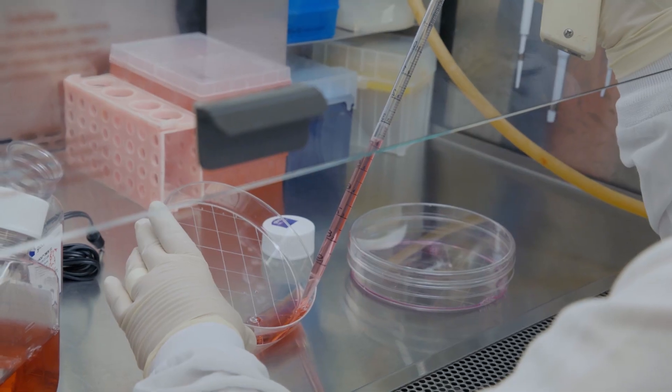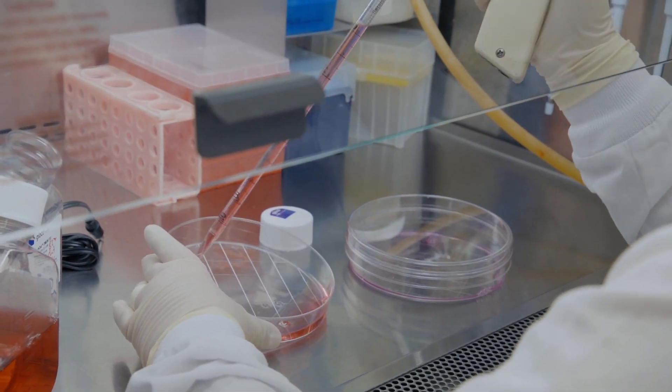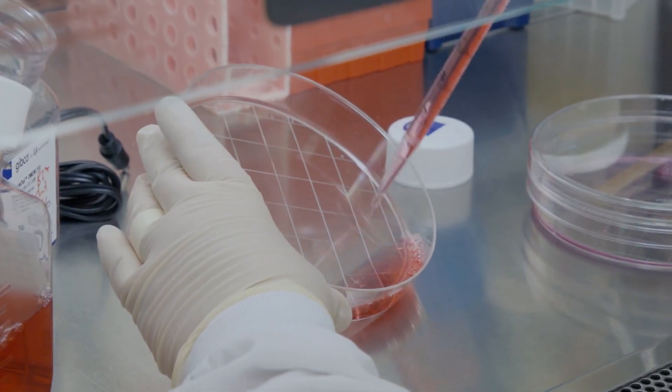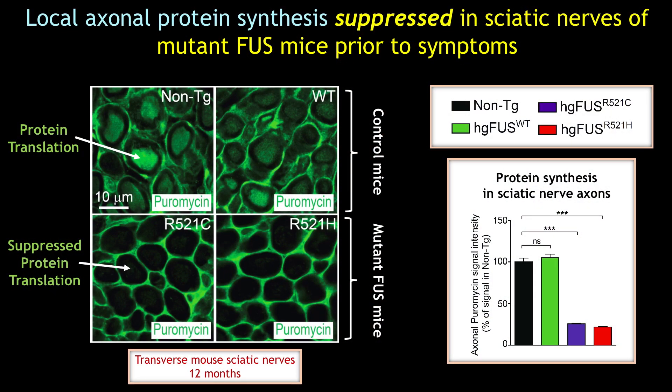We confirmed this intra-axonal suppression of protein synthesis in vivo by injecting puromycin to tag actively synthesized proteins and measure local protein synthesis in the sciatic nerve of humanized mutant or wild-type FUS mice. Puromycin incorporation was significantly lower in the axons of mutant FUS mice, despite equal accumulation in the surrounding myelinated cells. This correlated with increased integrated stress response in the sciatic nerve, as shown by elevated phosphorylated EIF2-alpha, and all of these changes occur before disease symptoms.